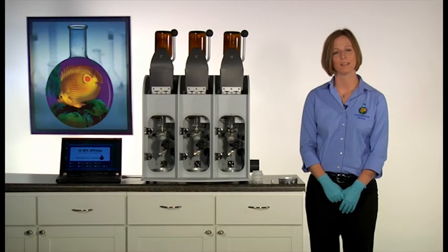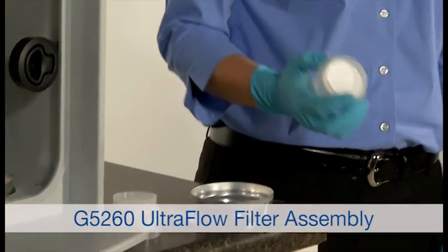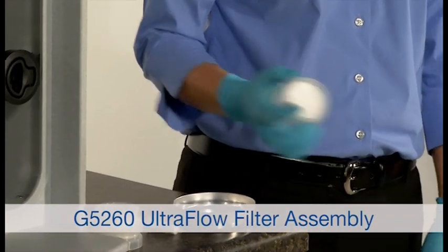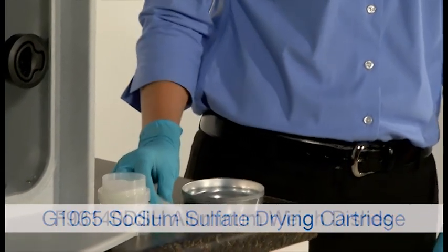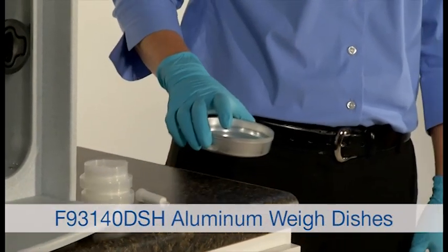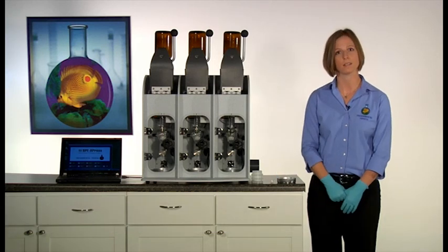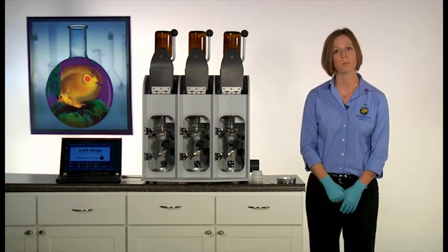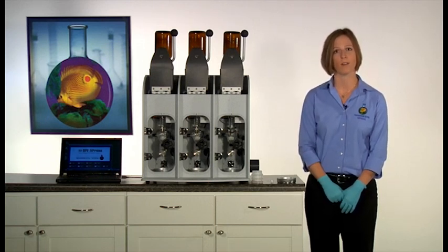To operate the SPE Express, you will need a few consumables. The Environmental Express Ultraflow filter assemblies, sodium sulfate drying cartridges, and aluminum weighing pans. Other items that you will need to operate the SPE Express are a vacuum pump or house vac, a nitrogen source at 70 PSI, hexane, methanol, and DI water.